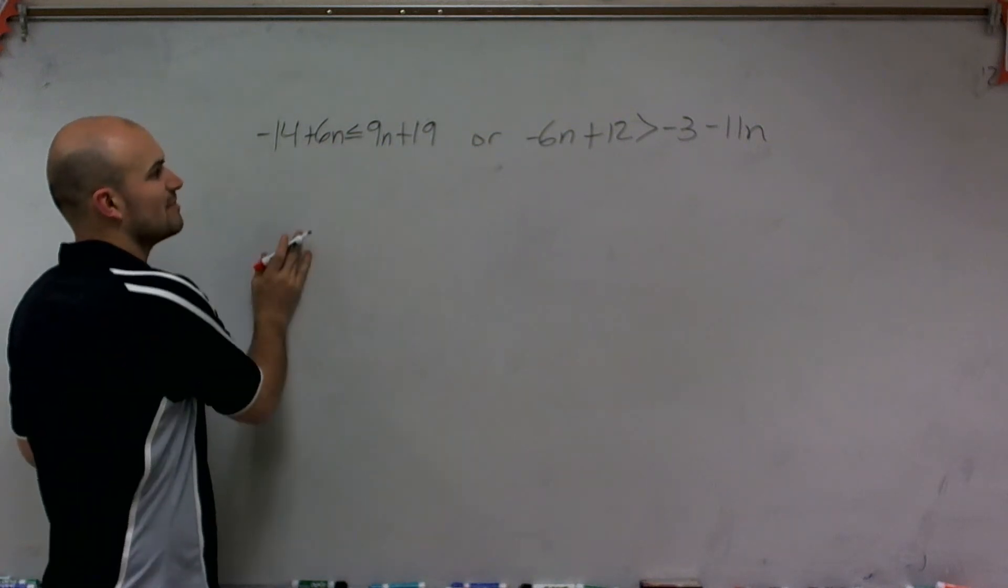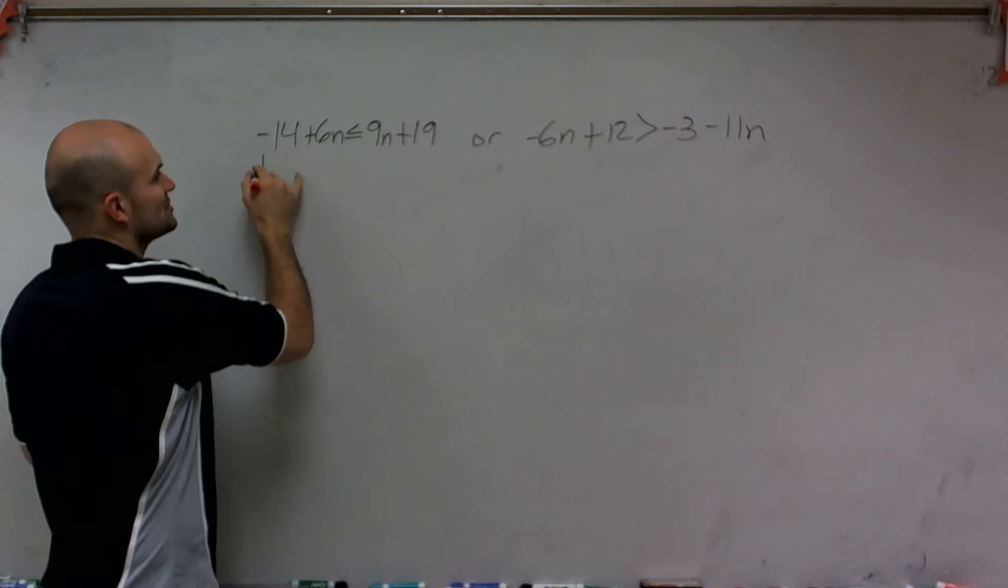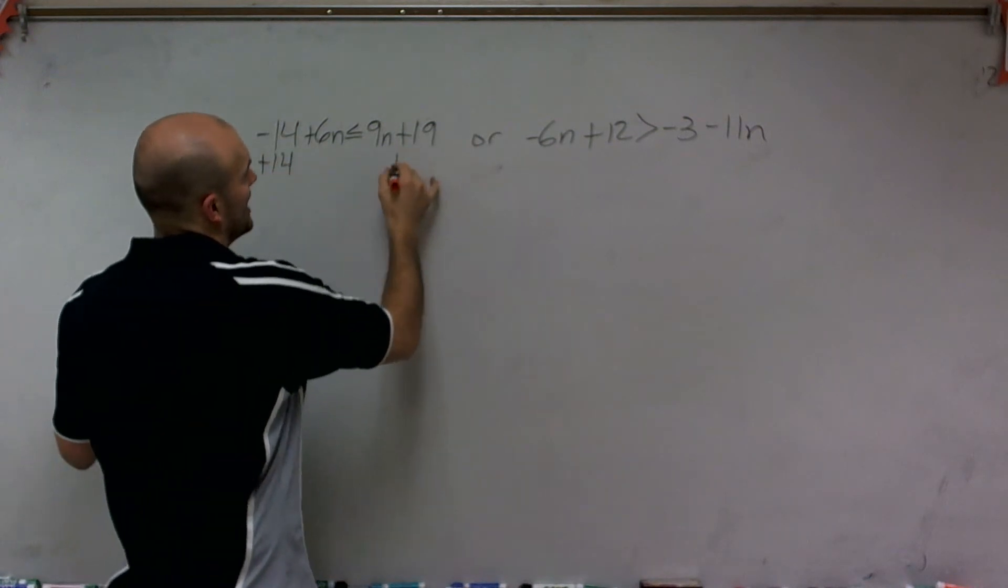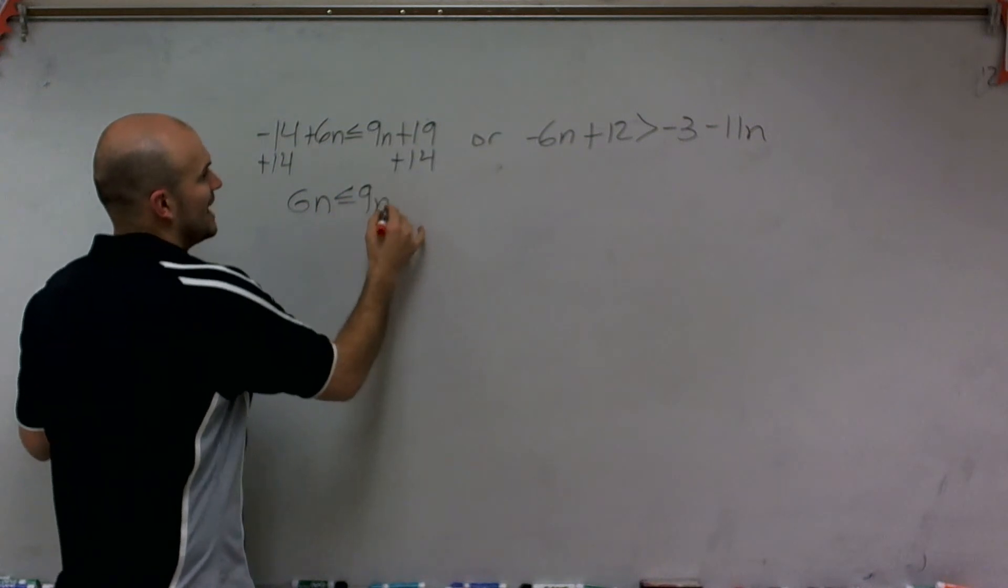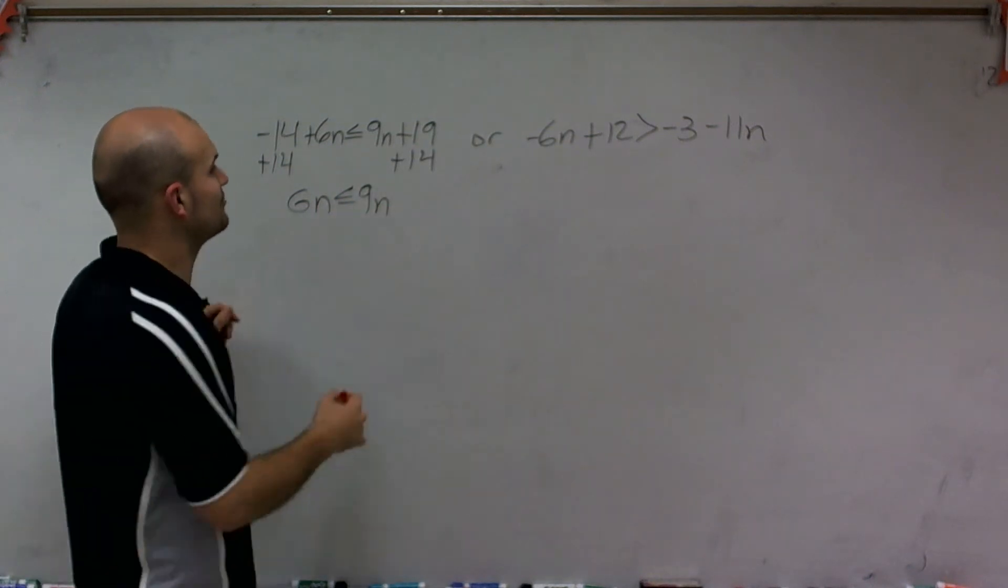So the first thing, if I want to isolate my variable on the left side, I need to get everything else off that side. So I'll add 14. Therefore, I'm left with 6n is less than or equal to 9n plus 33.